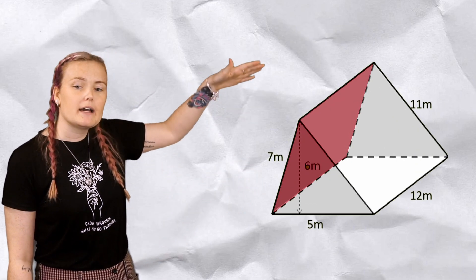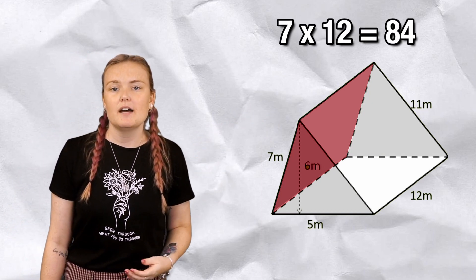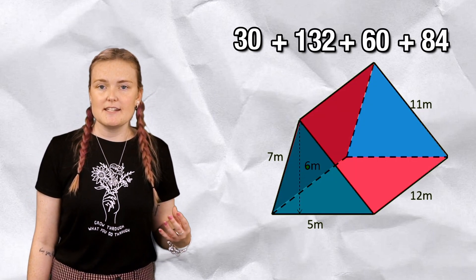And I've then got the back and the back is 7 by 12, which if I times those together I get 84. So I've got 30, 132, 60, and 84.